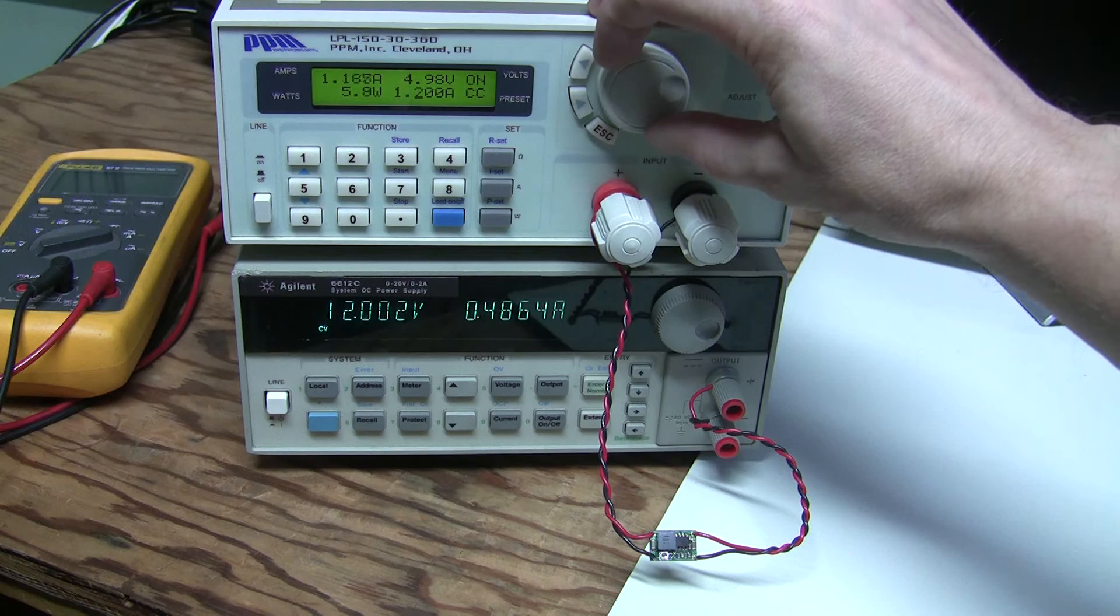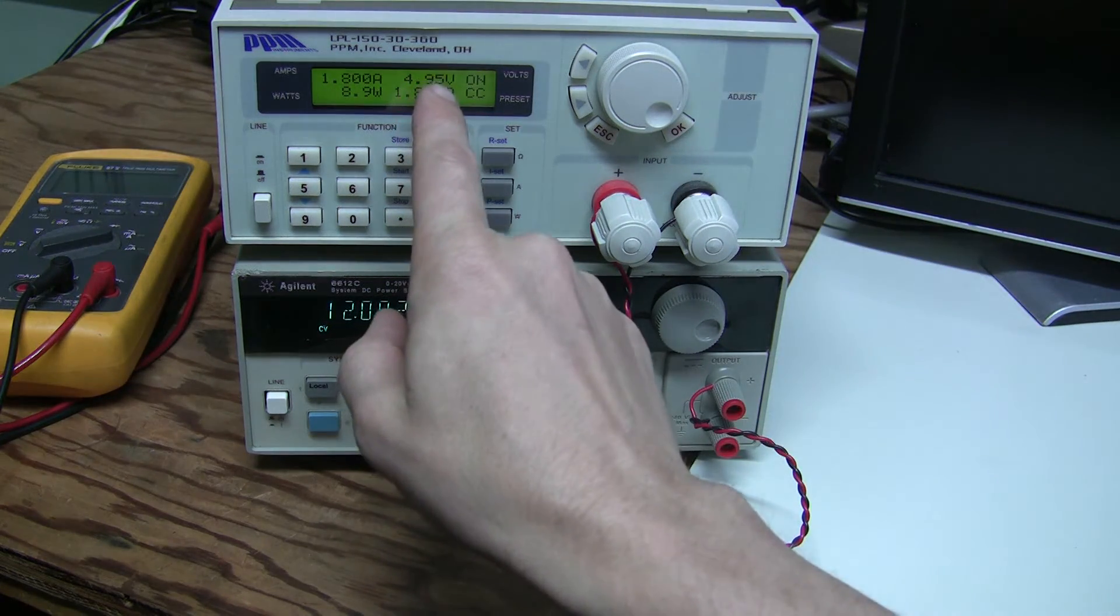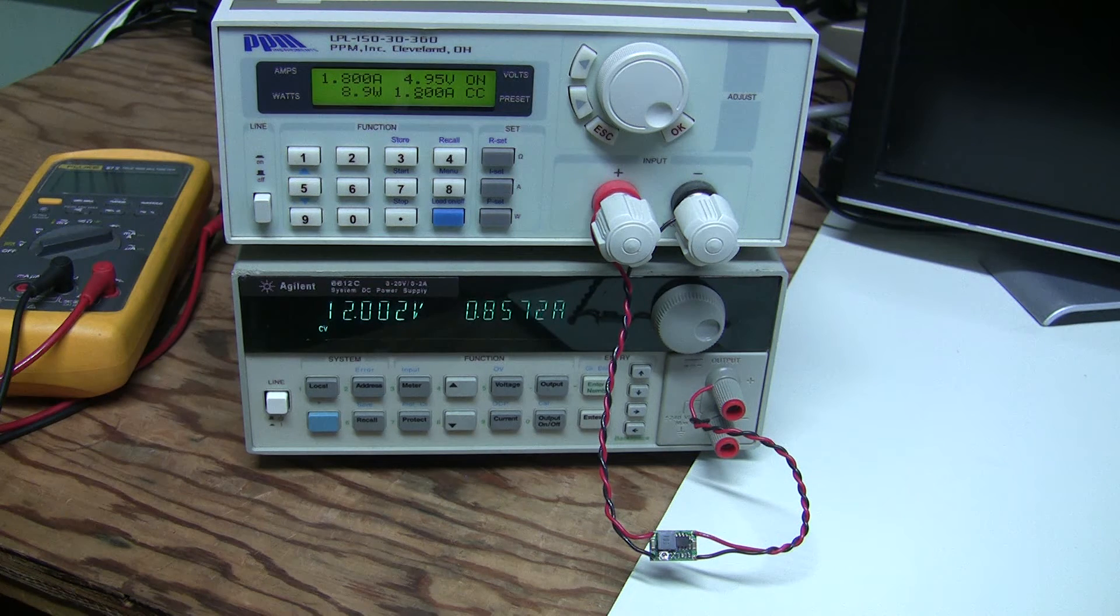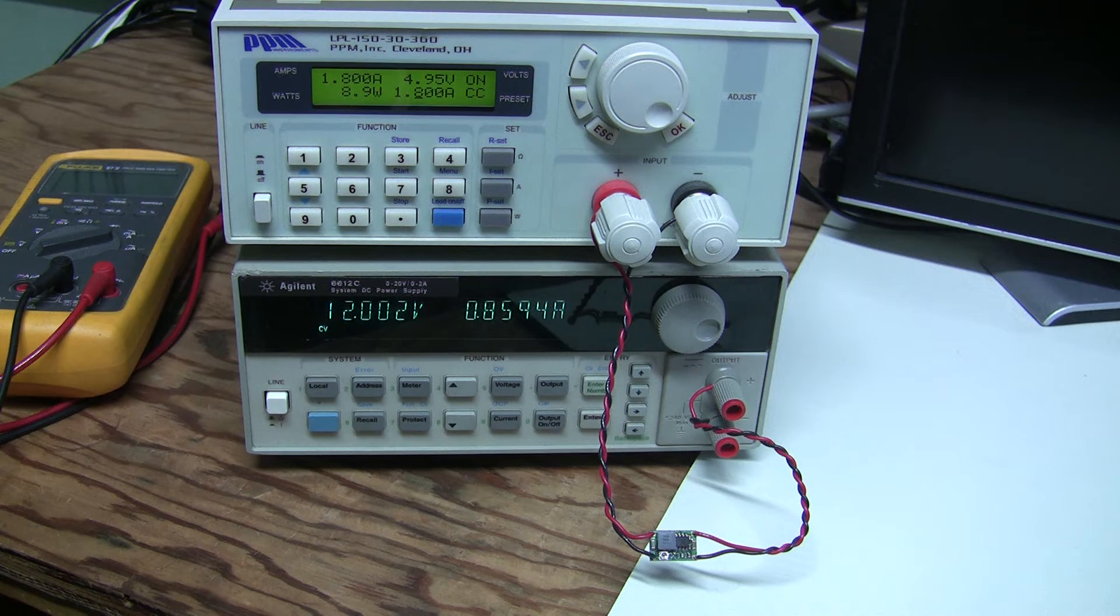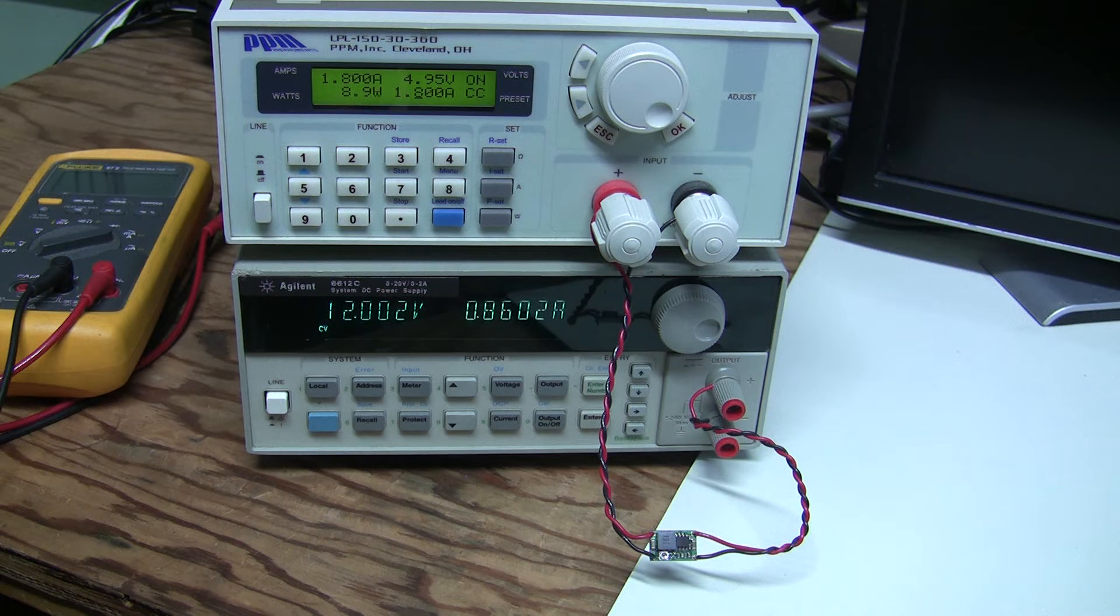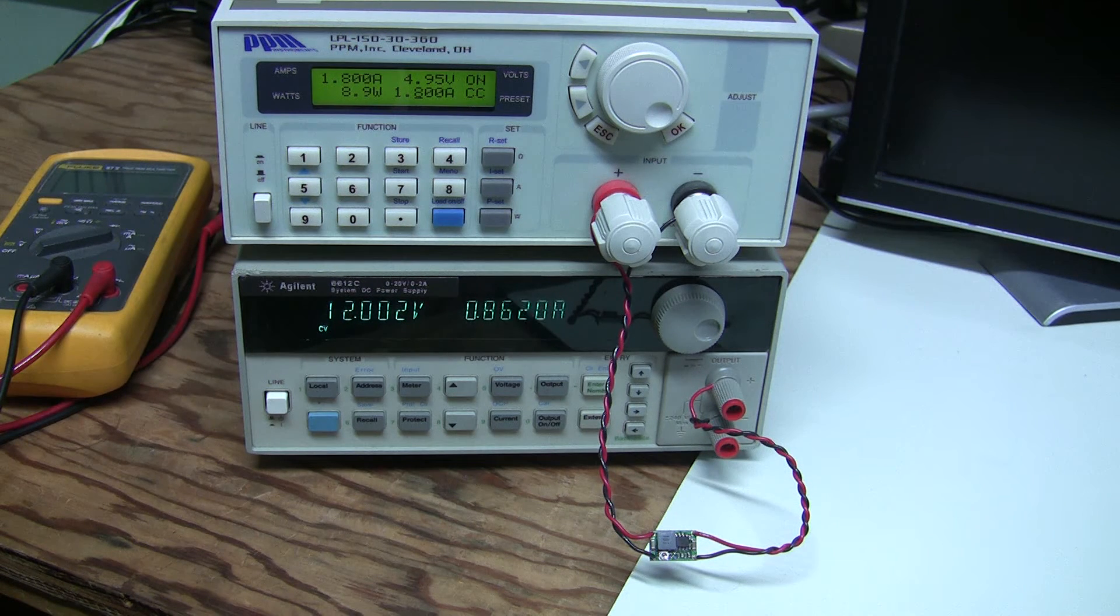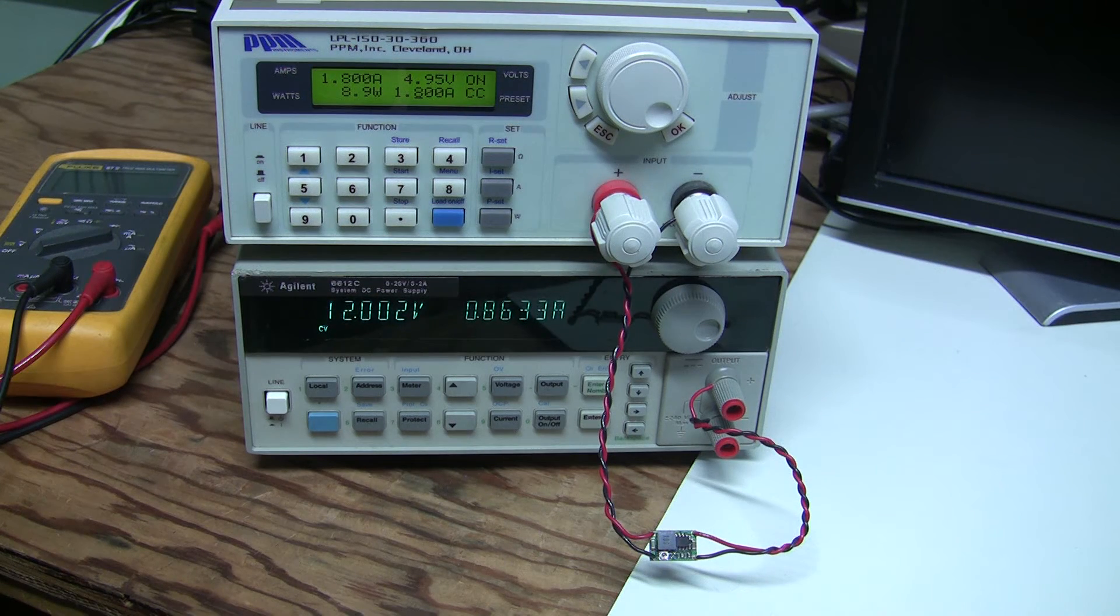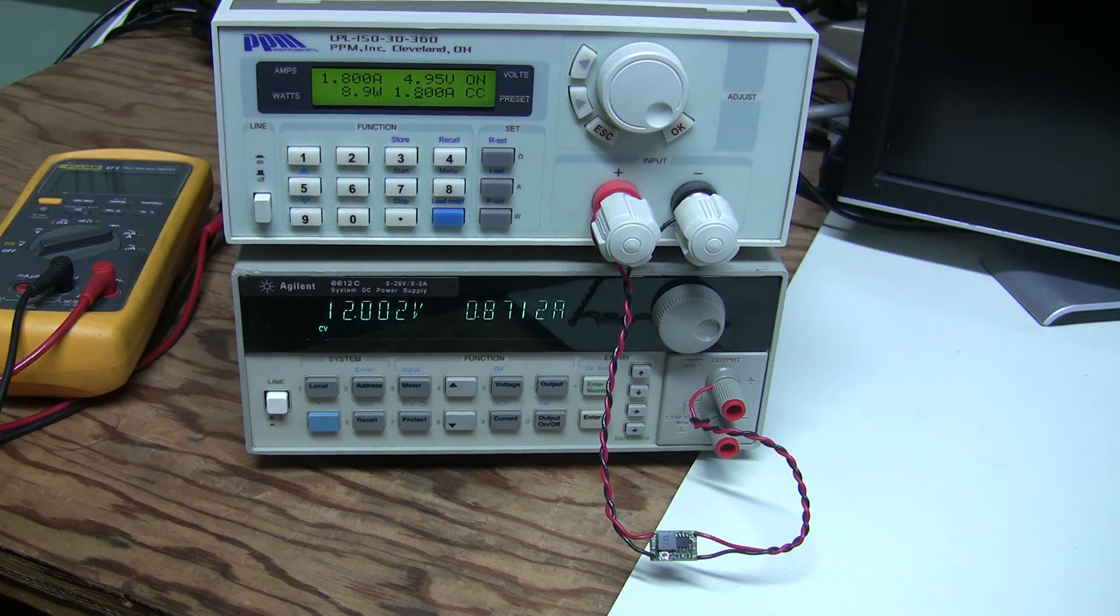All right, let's go all the way to 1.8 amps. So the output voltage is almost exactly 5 volts. Let's see what the efficiency is. 12 times 0.85 or 0.86 is 10.32 watts in. Let's divide 8.9 by 10.32, and the efficiency is 86 percent at this point. It was running for a few minutes like this at 1.8 amps, and let's measure the temperature.